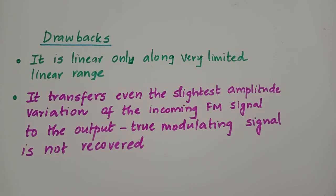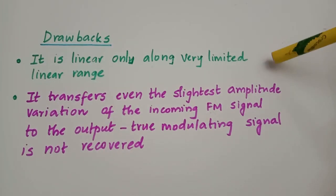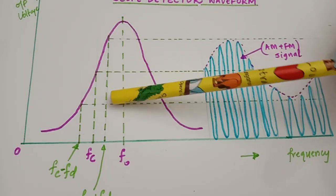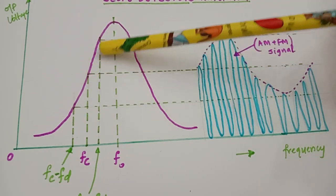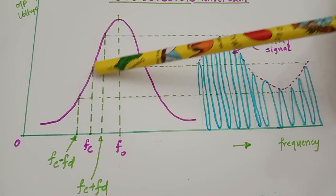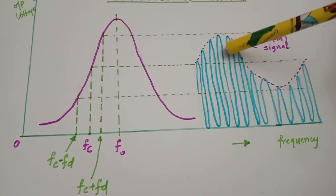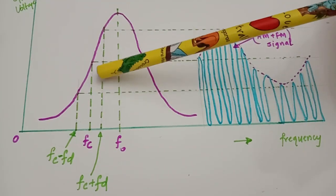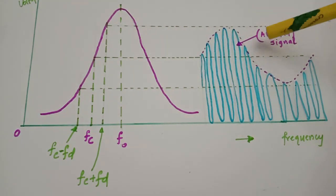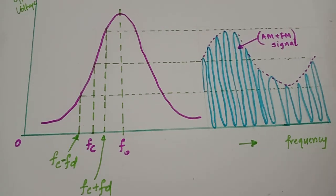A simple slope detector is one of the simplest and cheapest circuits for demodulating FM, but it has major drawbacks because of which it is seldom used. The first major drawback is that it is linear only over a very limited range. The slope of the response curve is not linear; it is a non-linear curve, and linearity exists only over a very small range. This means the variation in frequency and the corresponding variation in amplitude will not be linear, so the demodulated signal may not exactly replicate the original message signal.